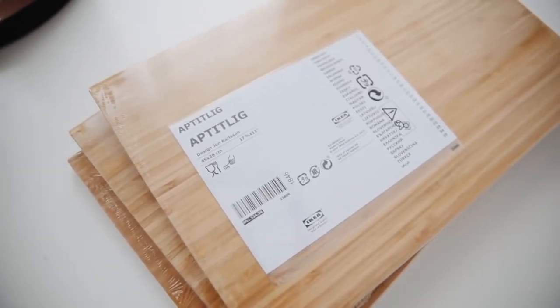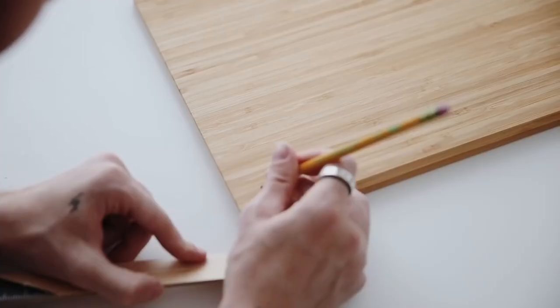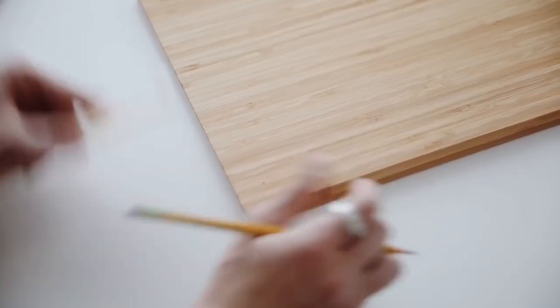This next project is an IKEA hack where I took these wooden cutting boards and measured an inch in on each of the corners and marked the spot. That way we can know where we're going to be drilling our holes later.